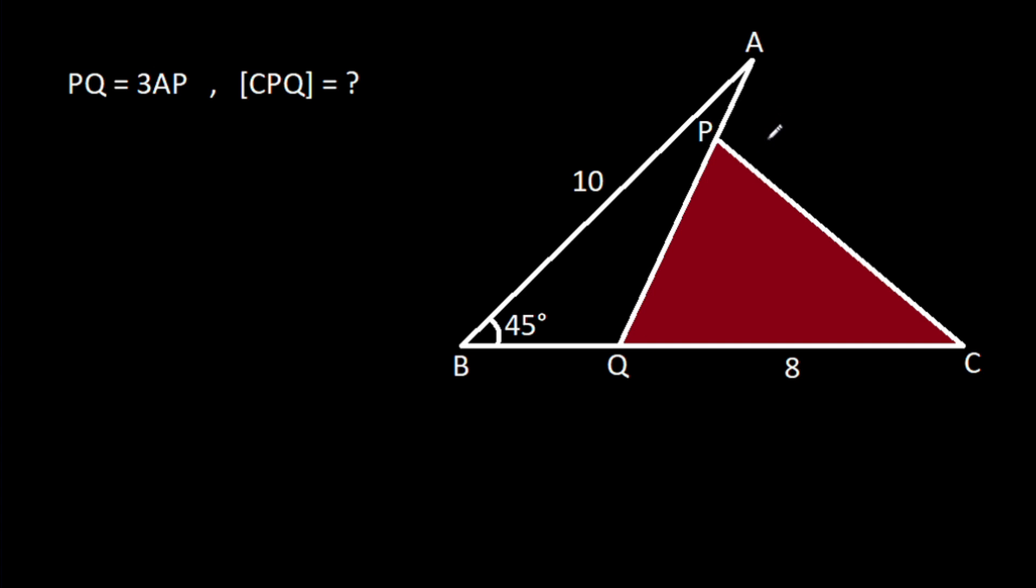In this video, we have been given that angle ABQ is 45 degrees, AB is 10, CQ is 8, and PQ is 3 times AP. Then we have to find the area of CPQ.